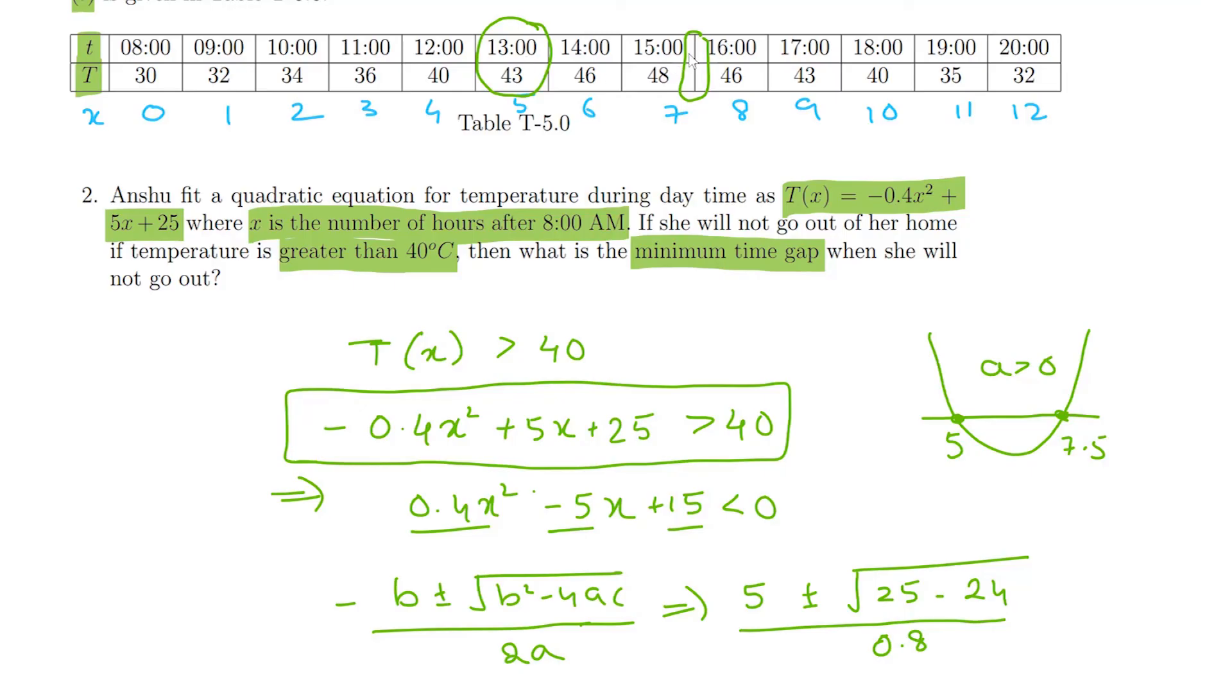So from 1 PM to 3:30 PM is the time suggested by the curve fit that Anshu has drawn. But clearly this is wrong because it is already 43 here and 48 here and 46, 43, and 40 and 40. So it is a much larger duration where the temperature is greater than 40 degrees Celsius. So this particular curve fit is pretty bad.